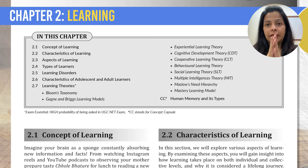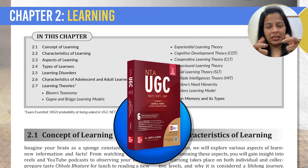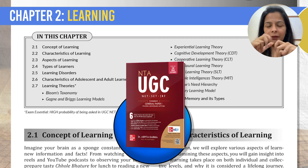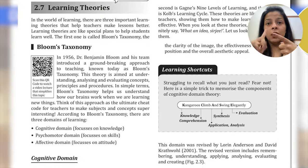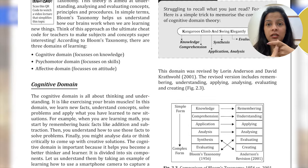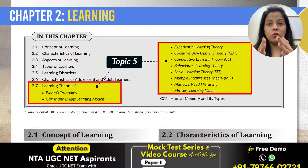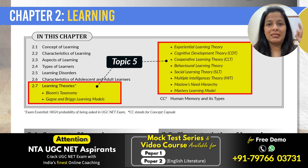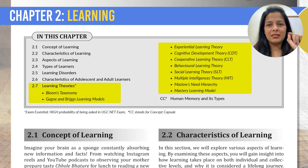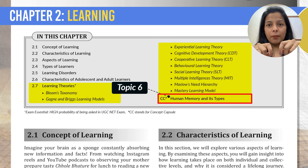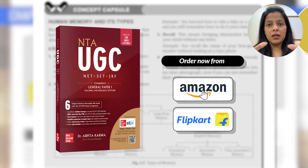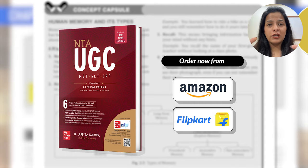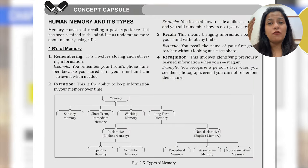Now we move on to the next chapter — learning. The most important topic in this chapter is learning theories. Make sure you have a strong grasp on all the learning theories, especially Bloom's taxonomy, cognitive development theory, and behavioral learning theories. UGC nowadays is asking application-based questions from these theories, so just tracking the theories won't get you marks. Another topic from which a number of questions are asked these days is human memory and its types — covering the stages of memory and types of long-term and short-term memory.